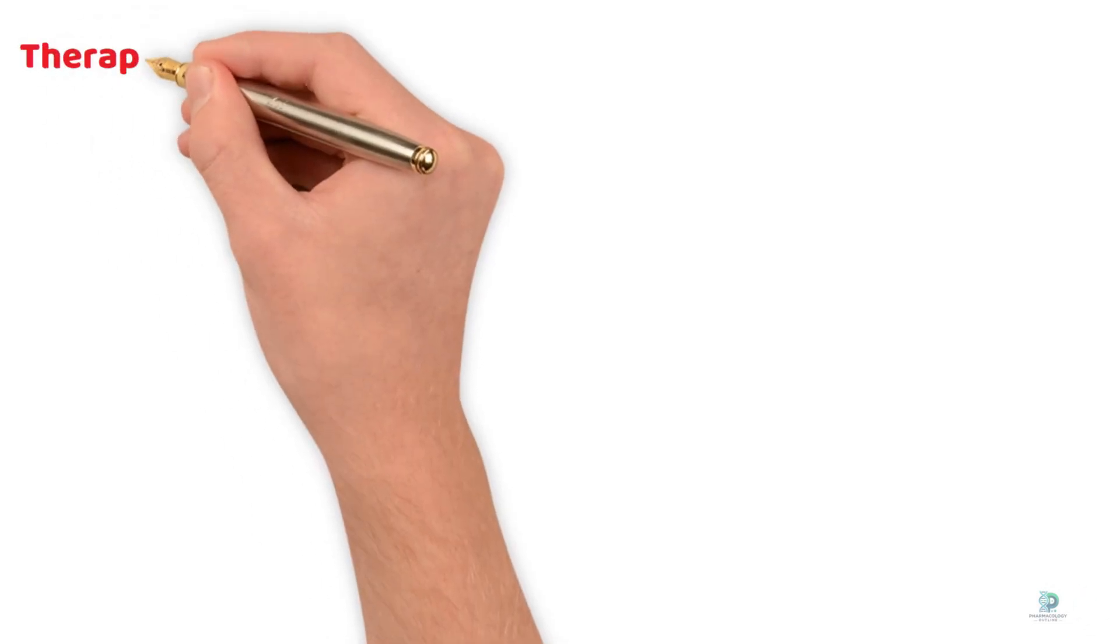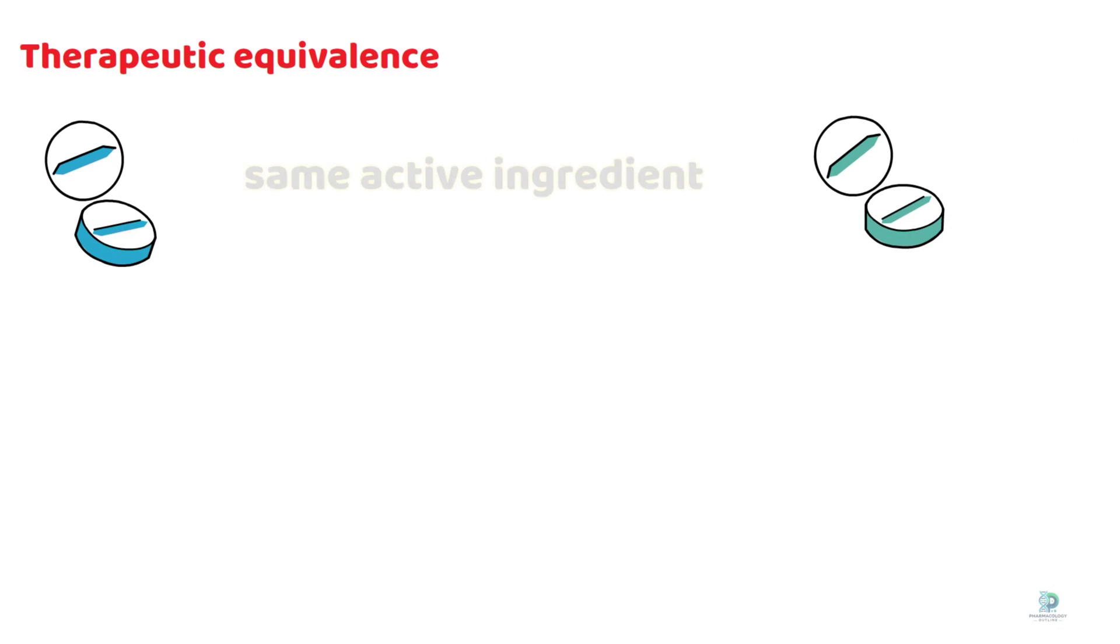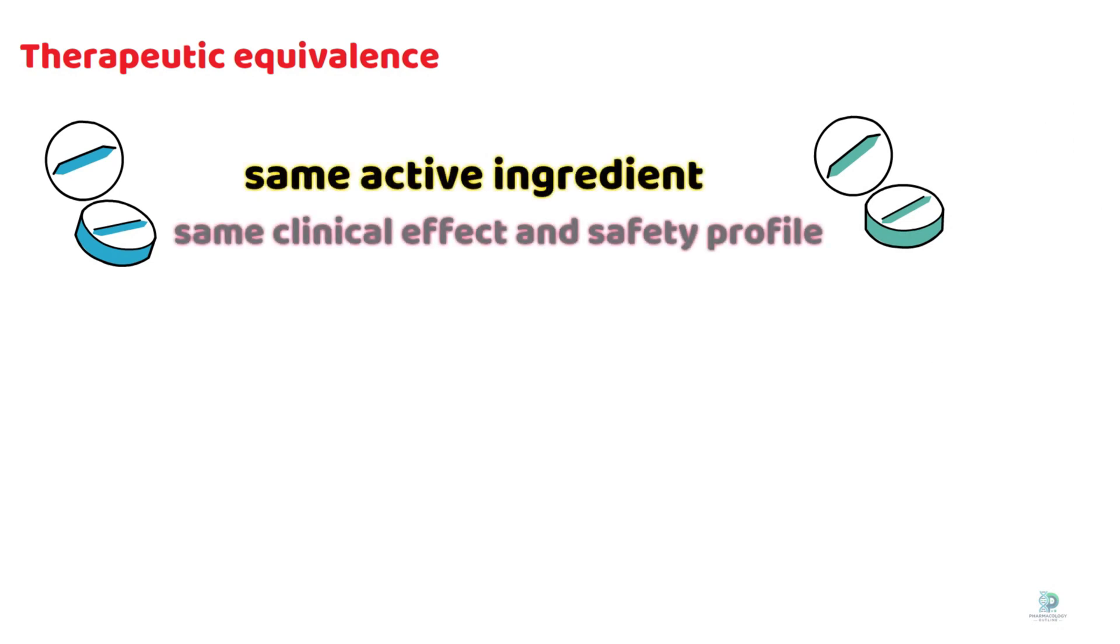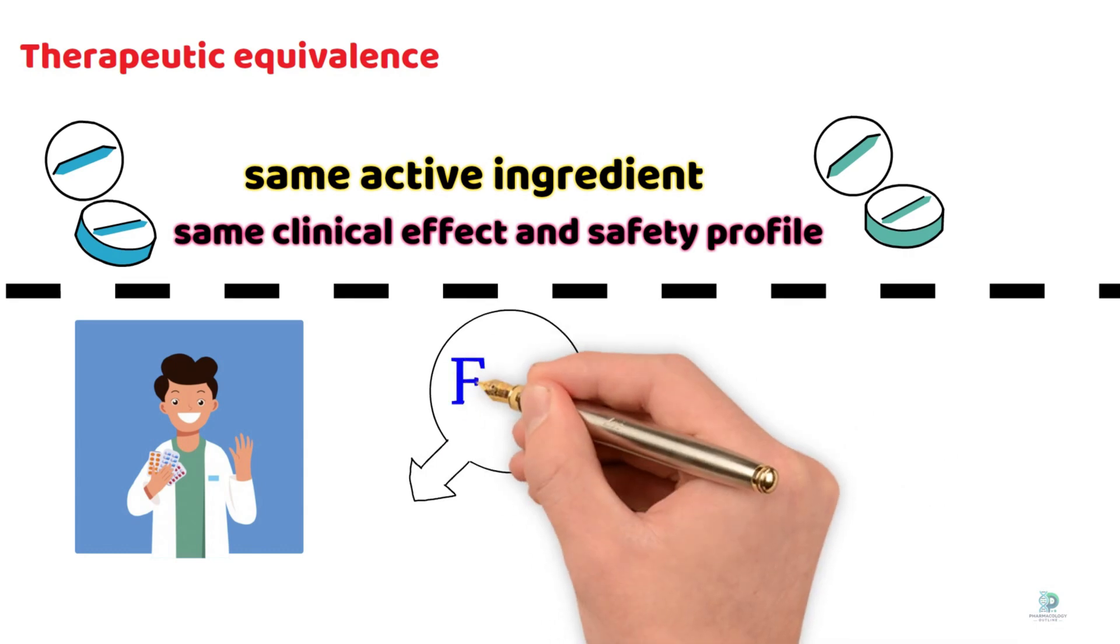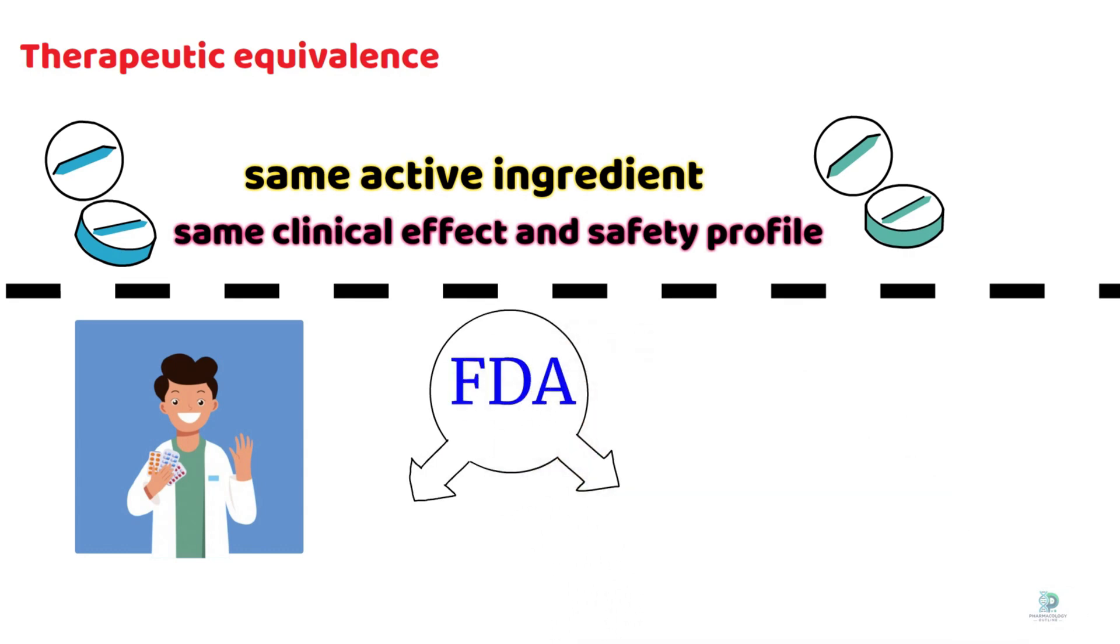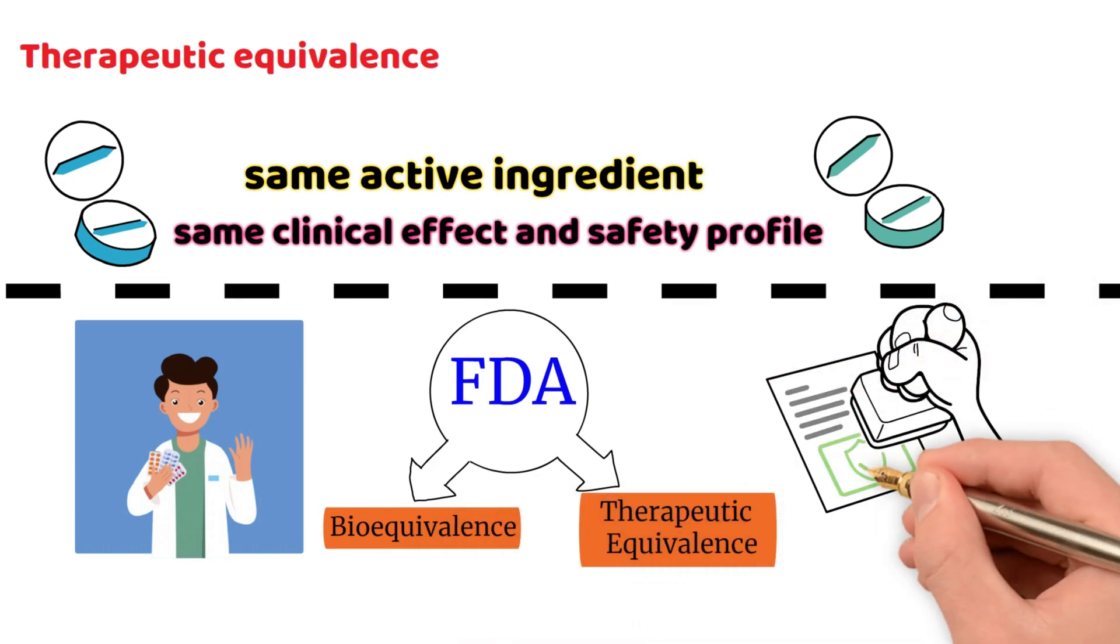Finally, let's talk about therapeutic equivalence. Therapeutic equivalence means that two drugs not only have the same active ingredient but also produce the same clinical effect and safety profile in patients. This concept is crucial when pharmacists substitute generic drugs for brand-name prescriptions. Regulatory agencies like the FDA ensure that generic drugs meet strict standards of bioequivalence and therapeutic equivalence before they are approved.